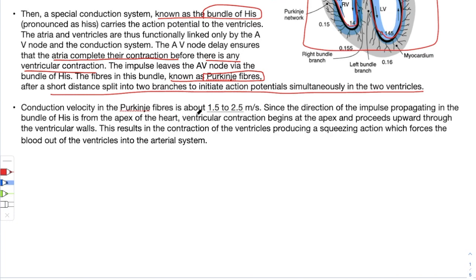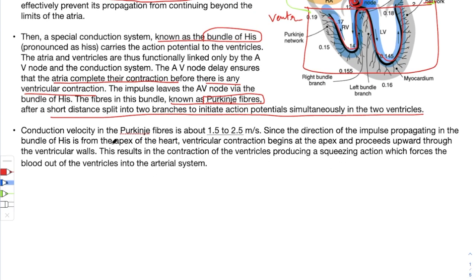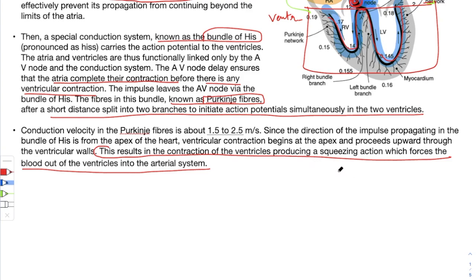Conduction velocity in the Purkinje fibers is about 1.5 to 2.5 meters per second. Since the direction of impulse propagation in the bundle of His is from the apex of the heart, the ventricular contraction begins at the apex and proceeds upward to the ventricular walls. This results in contraction of the ventricles producing a squeezing action that forces blood out of the ventricles to the arterial system, which then sends it to the lungs for oxygenation and back to the heart.